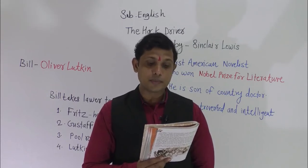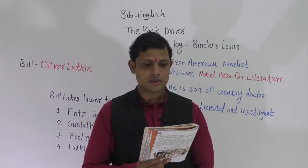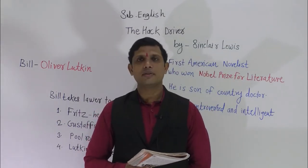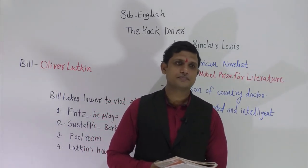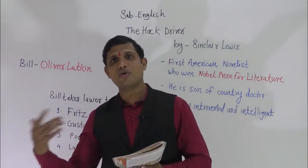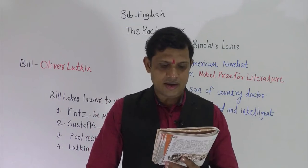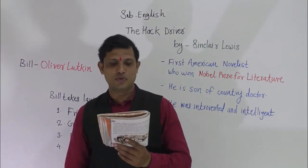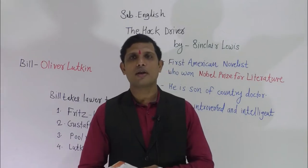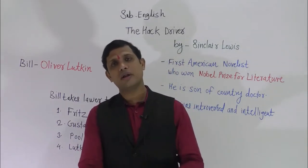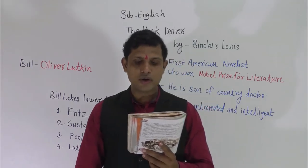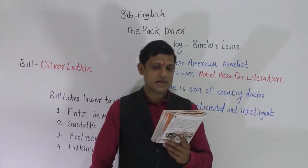Bill seemed to admire Lutkin's talent for dishonesty — actually he was describing how bad Lutkin was, and he had great knowledge about him. The lawyer thought: if Bill had been a policeman, he would have caught Lutkin respectfully and jailed him with some regret. Bill let the lawyer into Fritz's shop and asked cheerily: 'Have you seen Oliver Lutkin around today? A friend of his is looking for him.'